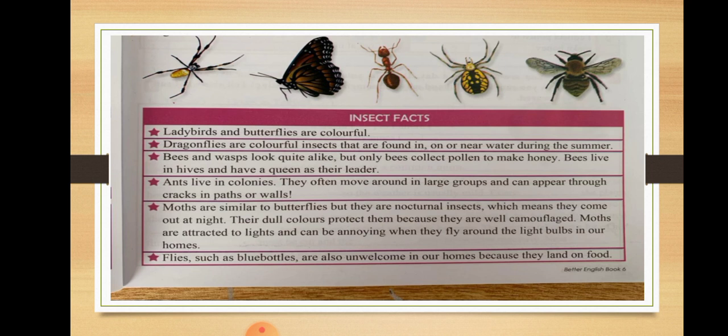Wasps do not collect pollen — only bees collect pollen to make honey. Bees live in hives and have a queen as their leader. They live in large colonies and work together. Ants also live in colonies; they often move around in large groups and can appear through any cracks in paths or walls.